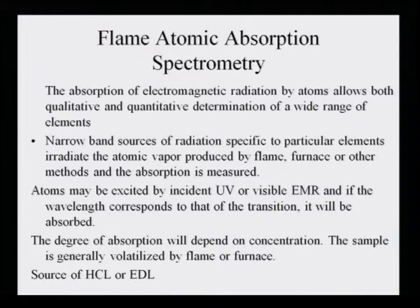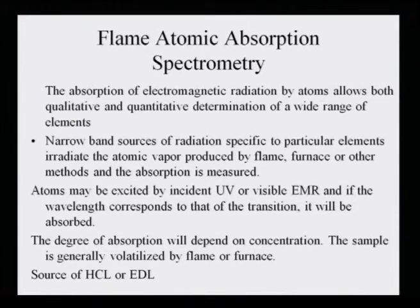Flame atomic absorption spectrometry: the absorption of electromagnetic radiation by atoms allows both qualitative and quantitative determination of a wide range of elements — not only whether an element is present or absent, but also how much of it in concentration is present can be determined for a large variety of elements. Narrow band sources of radiation specific to a particular element irradiate the atomic vapor produced by flame, furnace or other methods and the absorption is measured. The absorption is directly proportional to the molecular species that is present.